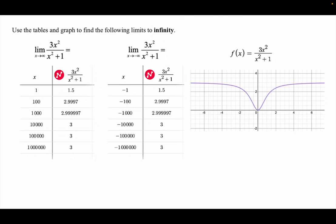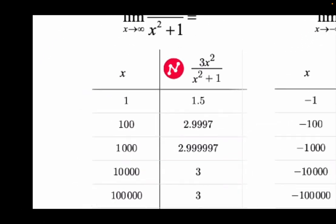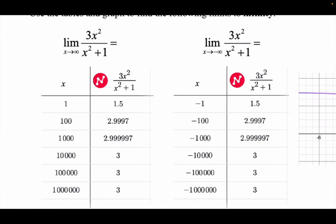I'll give you a couple tables here — use the tables and the graph to find the following. The limit as x approaches positive infinity. So we're going really big for this equation. I plugged in 1, then 100, then 1,000, then 10,000, then 100,000, then 1,000,000. As x gets bigger and bigger, y gets to 3 and it kind of stops. So the limit as x approaches infinity here is 3.